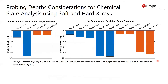Another thing we need to consider for chemical state analysis using two different X-ray sources is the probing depth. Since if the oxide films have a gradient in the chemical state, if we probe the Auger line and the photoelectron line at different depths,